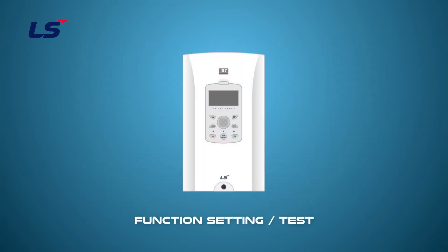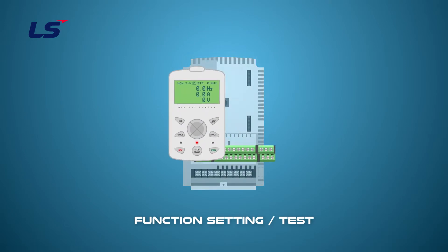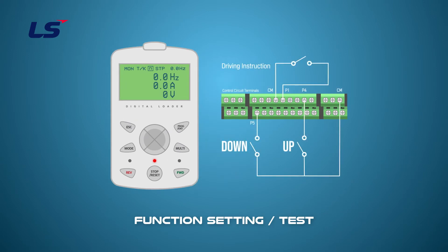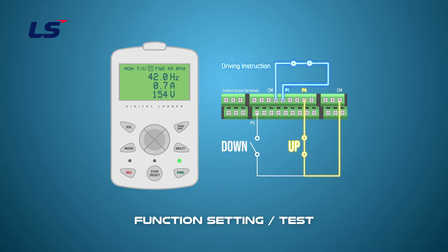When the multi-function digital input parameters are programmed to Up and Down, the frequency command source displayed at the top of the monitor mode changes to S. In this state, when the multi-function input programmed as Up is on, S changes to U to indicate Up operation and the output frequency increases. When the multi-function input programmed as Down is on, S changes to D.